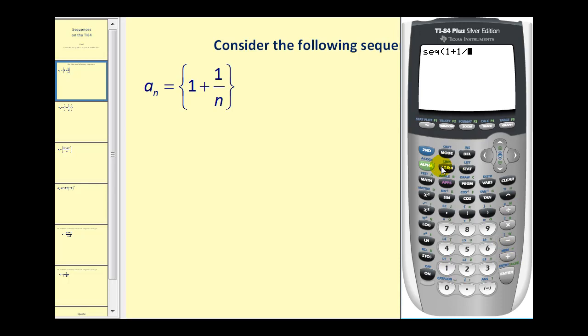Now when we press the variable, which is normally x, it will now be n because we're in sequence mode. Comma, and then we'll press n again for the variable used for the formula. Comma, we want n to start at one, comma, and end at ten. Close parenthesis, and when we press enter.